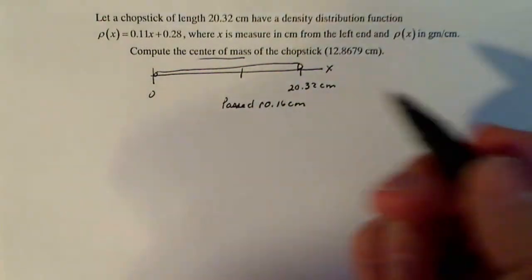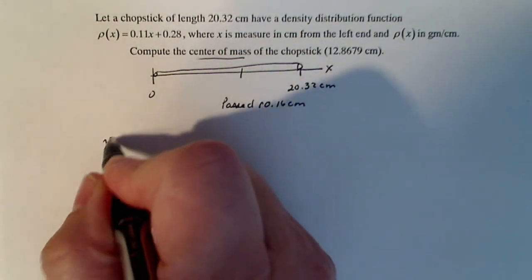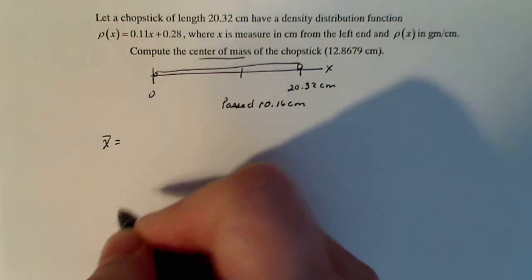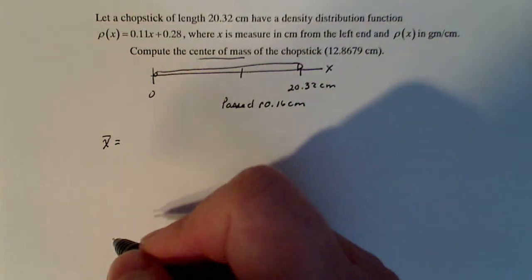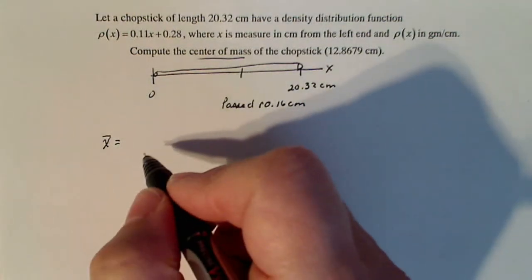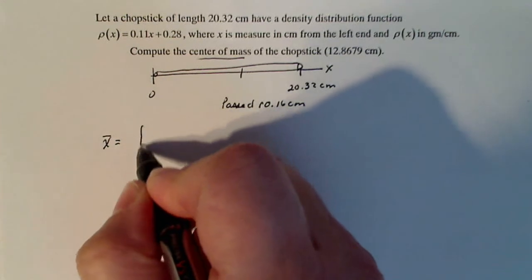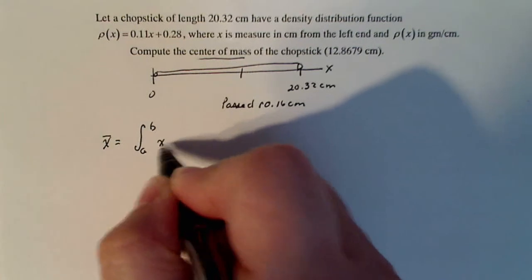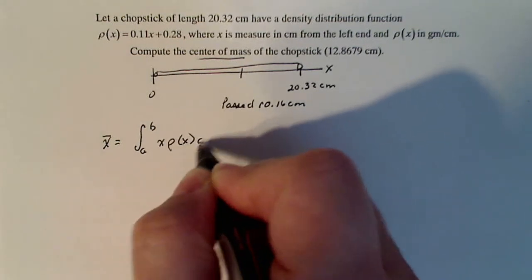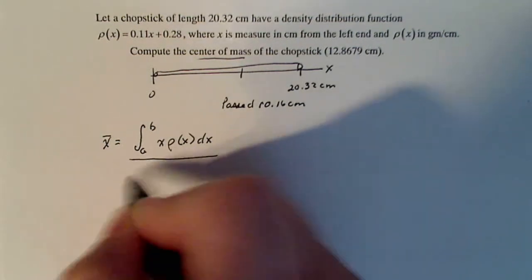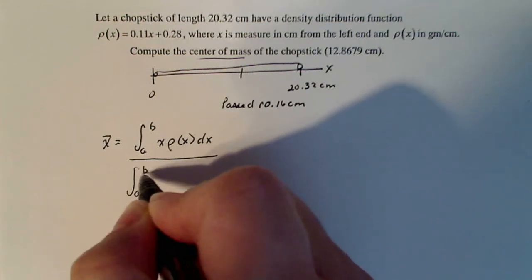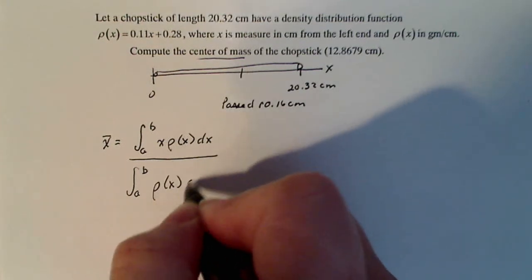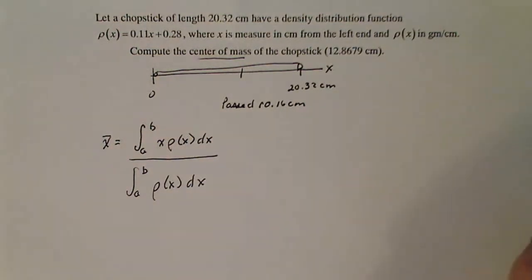According to the formula we derived in class and the formula that's probably in your textbook, the definition of center of mass is the integral from a to b of x times the density dx divided by the integral from a to b of the density dx. It's a pretty straightforward formula as long as you have your density.